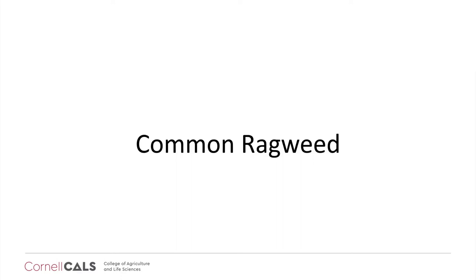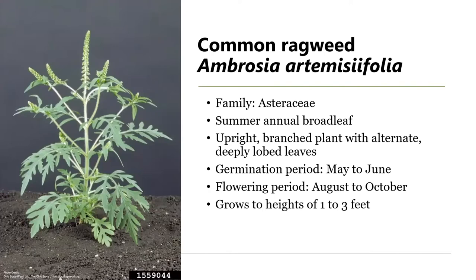Starting alphabetically with common ragweed, Ambrosia artemisiifolia. It is in the aster family — the same family as sunflowers. It is a summer annual broadleaf with an upright, branched habit and alternate, deeply lobed leaves. It germinates from May to June and can flower from August to October. The plant typically grows to about one to three feet in height when mature.